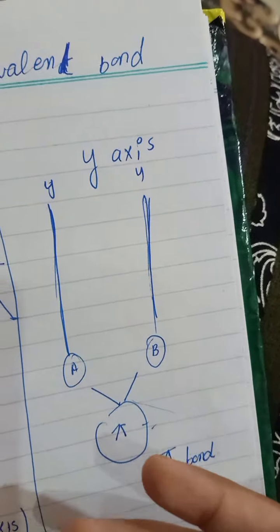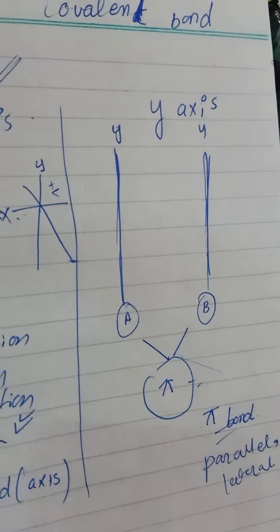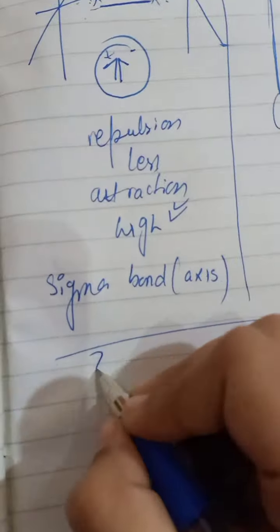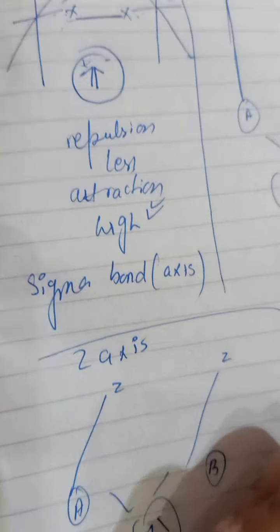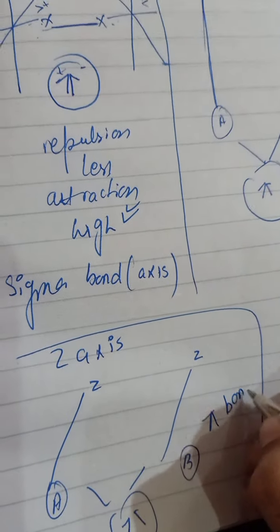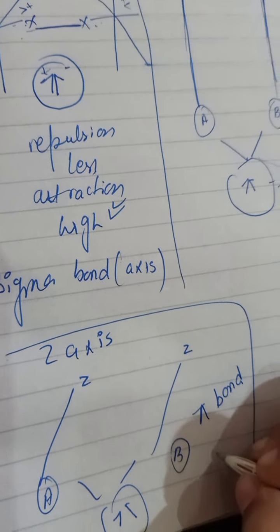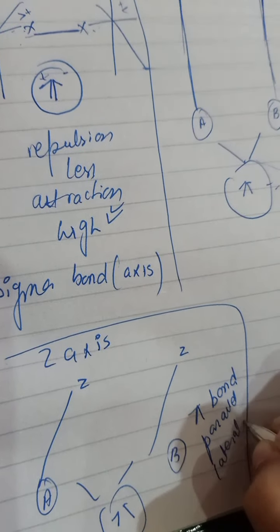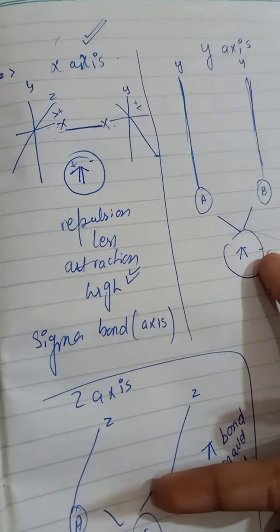This is having a parallel and lateral position. Now let's talk about the z-axis. The z-axis also has electron sharing — this is also a lateral overlap and is also called the pi bond. So first of all the sigma bond will occur, then these pi bonds — from y-axis and z-axis — will also occur.